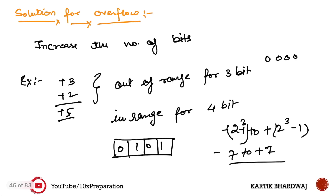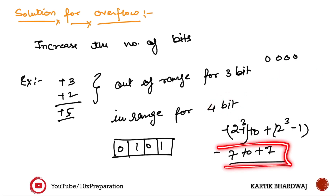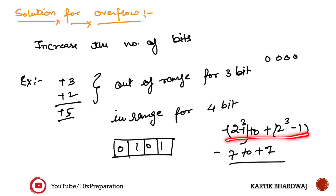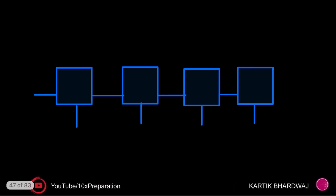Once you understand how to implement the overflow function, the solution to overflow is simply to increase the number of bits. If 3 bits are there, increase the number of bits, which increases the range. For example, with more bits the range extends to minus 7 to plus 7, so the result can now fit within the range without overflow.